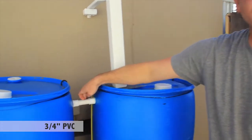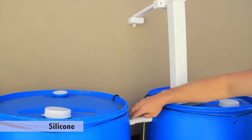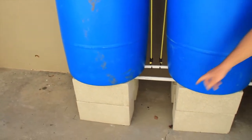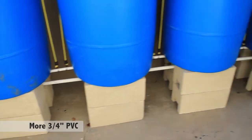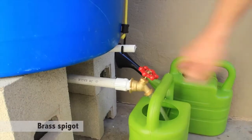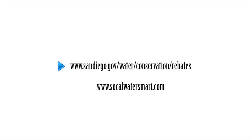Three-quarter inch PVC, a lot of silicone to make some watertight seals, and then they're all tied together by a three-quarter inch PVC and then a simple brass spigot. There's a couple of websites where you can get the rebates. The first is the City of San Diego, and the second one is the SoCal Water Smart rebate program.